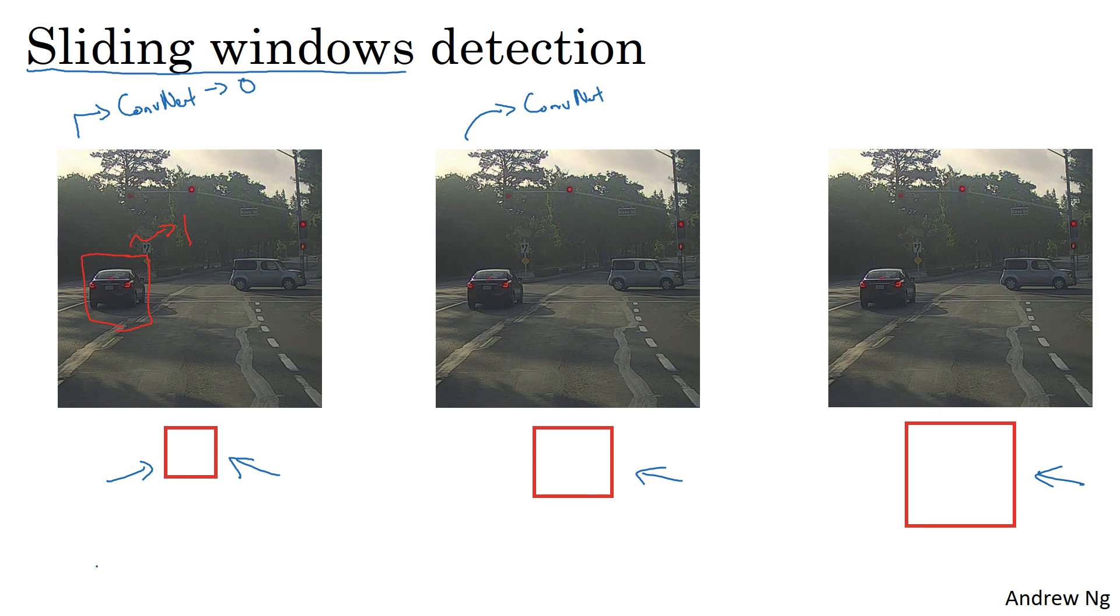There's a huge disadvantage of sliding windows detection, which is the computational cost. You're cropping out so many different square regions in the image and running each of them independently through a ConvNet. If you use a very coarse stride, a very big step size, that will reduce the number of windows you need to pass through the ConvNet, but that coarser granularity may hurt performance.